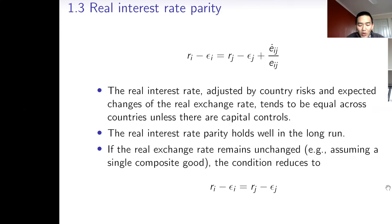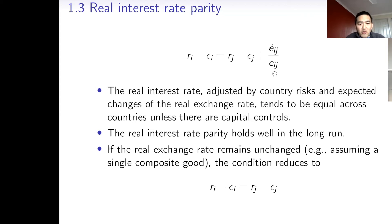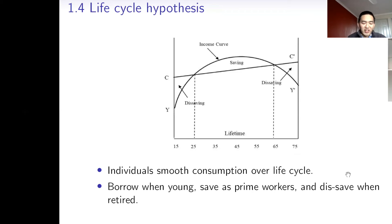To understand the link, we need two theories. One theory is about what drives international capital flows in general. I follow the real interest parity, which says the real interest rate adjusted by country risk and the expected change of the real exchange rate tends to be equal across countries unless there are capital controls. Empirical evidence supports that real interest rate parity holds very well in the long run. Under some assumptions, this condition reduces to become even simpler: the real interest rate adjusted by country risk tends to be equal across countries, which is quite intuitive because of arbitrage forces in capital markets.